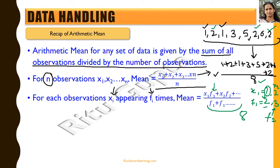Now this is a small set of data, so even using the standard formula of mean — just adding observations and dividing by the number of observations — would be possible. But suppose we have a huge dataset, maybe 100 or 200 observations, where some observations are obviously repeated. Then using the formula where we multiply the observation with its frequency and add them together, dividing by the sum of all frequencies, is going to be a much easier approach.